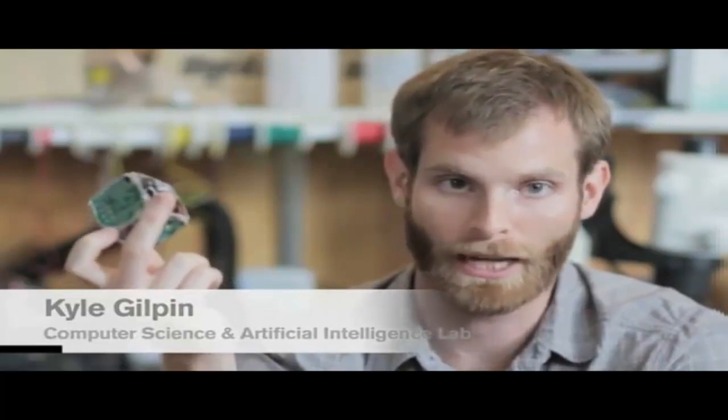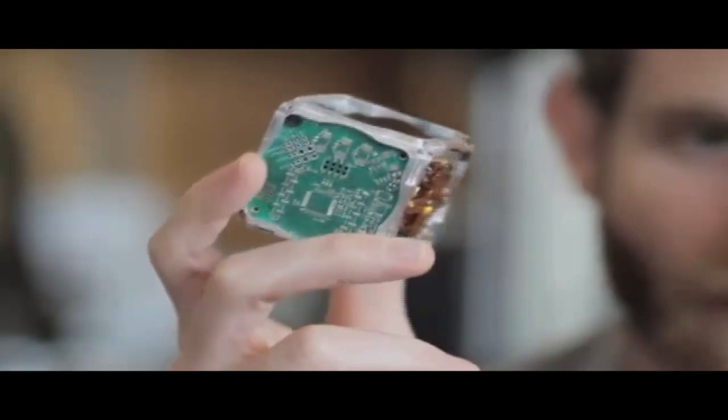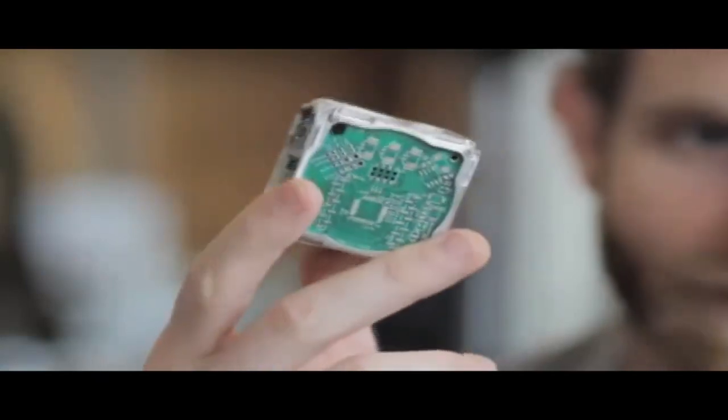This allows for a lot more types of motion with only one actuator. There were a couple challenges when we came to design the M-blocks. One was fitting everything inside a relatively small volume: a brushless motor controller, a flywheel, a braking mechanism, electronics, a radio, and a battery.